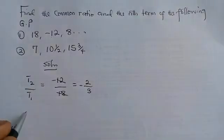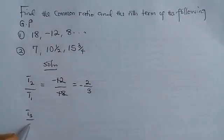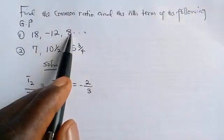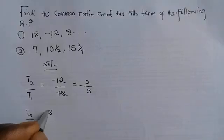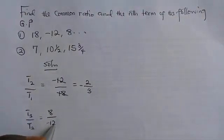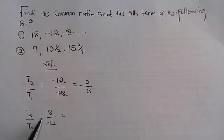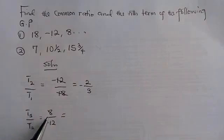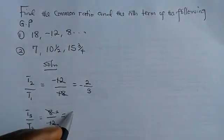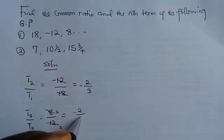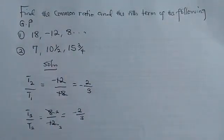To verify, we can also use T3 divided by T2. T3 is 8 and T2 is minus 12. The highest common factor between 8 and 12 is 4. 4 goes into 8 two times, and 4 goes into 12 three times. So we again get minus 2 over 3. That's how to get common ratios.